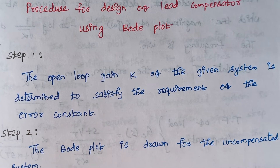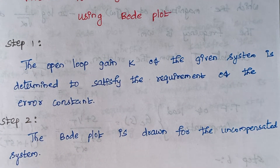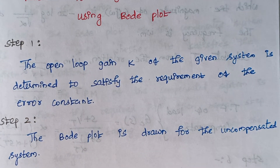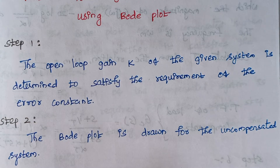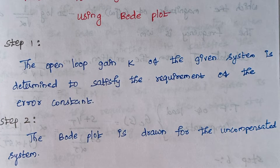Step 2 is the Bode plot is drawn for the uncompensated system. That is, for the given transfer function we have to draw the Bode plot. As we all know, the Bode plot consists of two types of plots: one is known as the magnitude plot and another one is known as the phase plot.